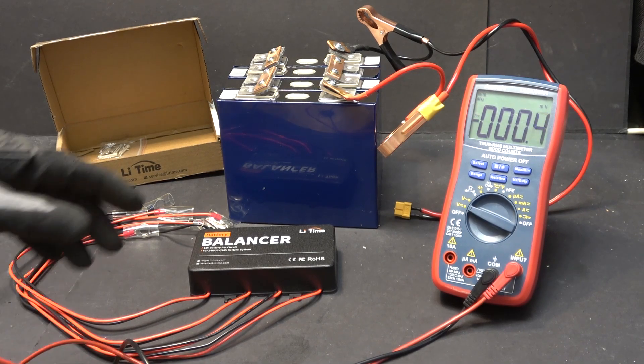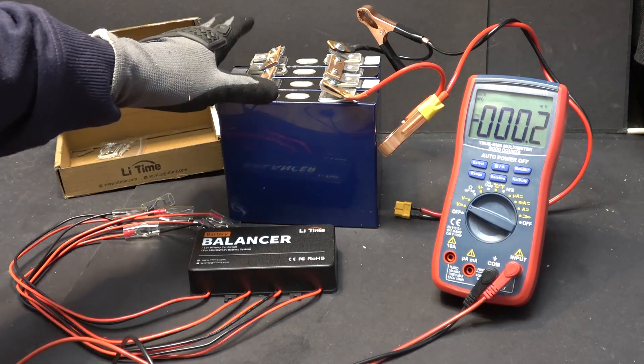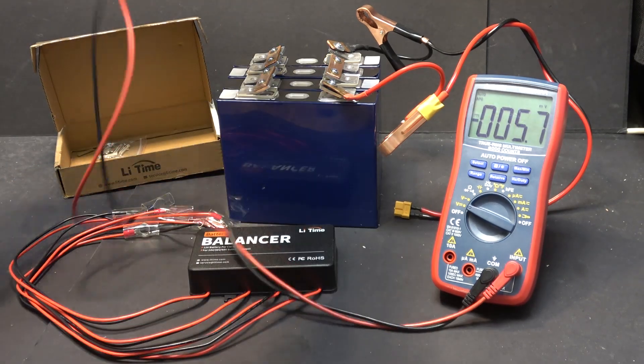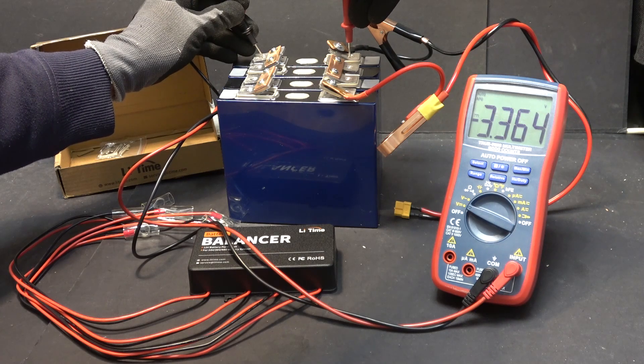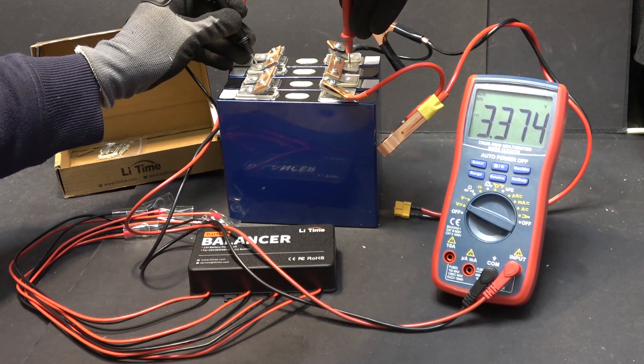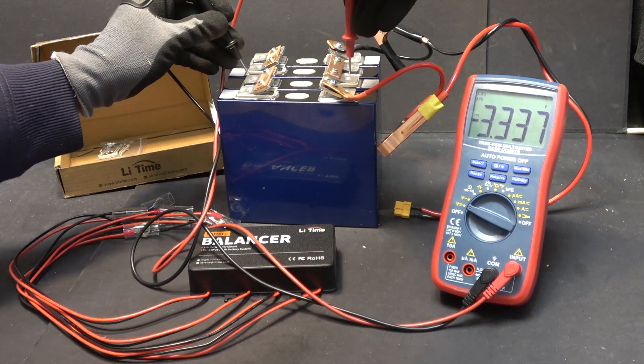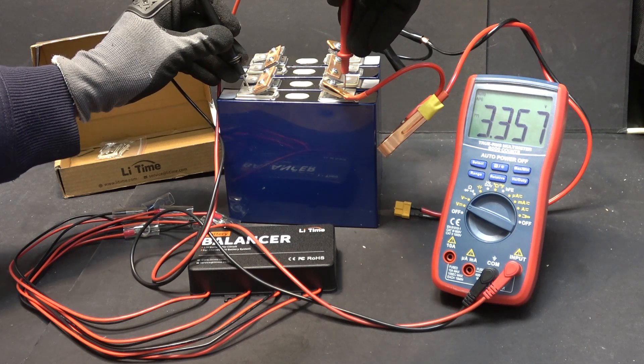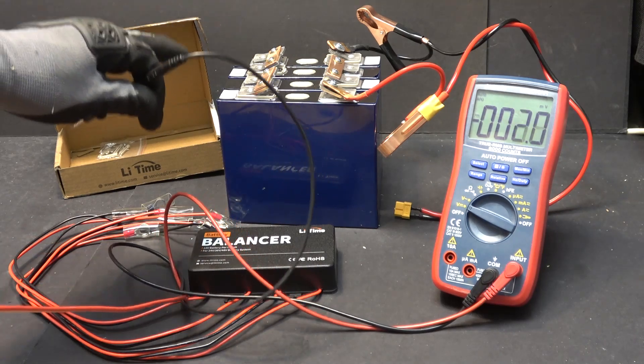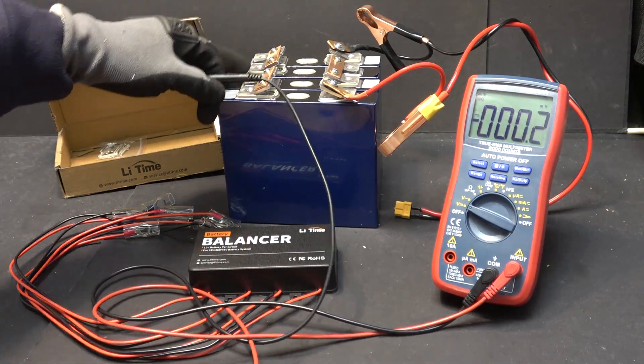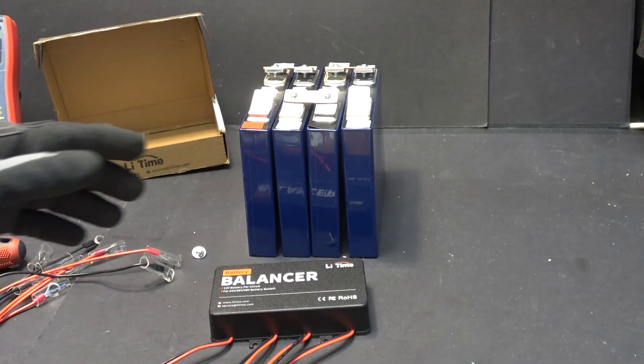So first, I want to try and see if the balancer would work with this 12 volt battery pack. Let's measure the voltage of each cell. 3.364, 3.374, 3.337, 3.356. So this whole battery pack here is very unbalanced. None of the cells are the same voltage. Let's put it to the test, shall we?